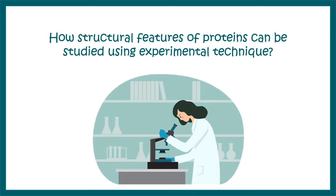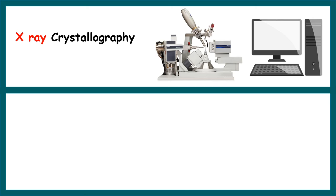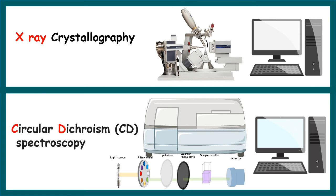Let me tell you how structural features of proteins can be studied using experimental techniques. How can we experimentally determine the changes at the level of beta pleated sheet or alpha helices? Techniques like X-ray crystallography or circular dichroism spectroscopy could be useful to study these features. If you want to learn about these specific techniques, the link would be provided in the i button.